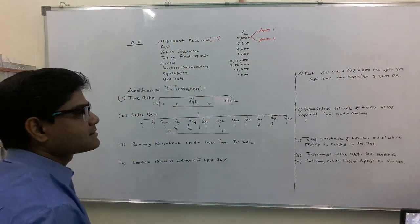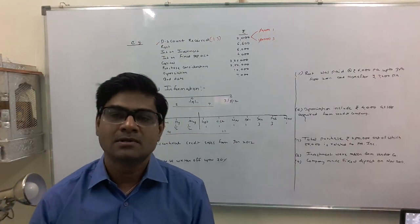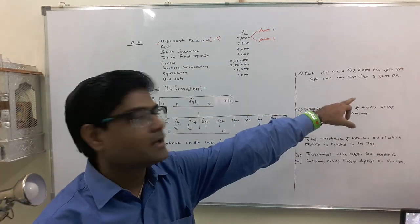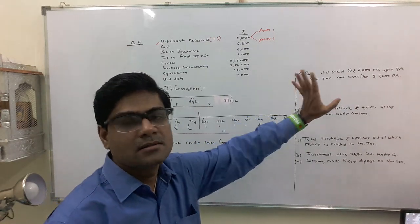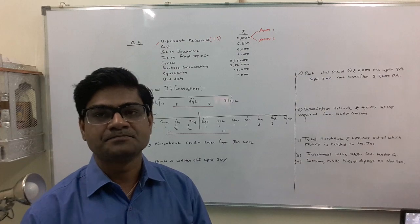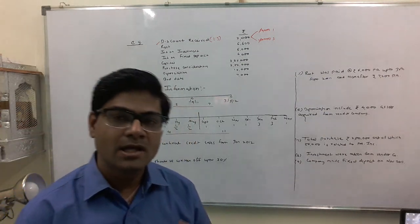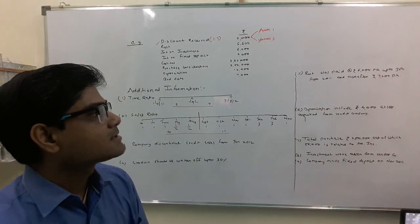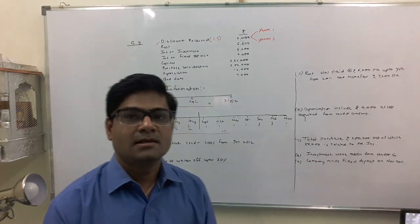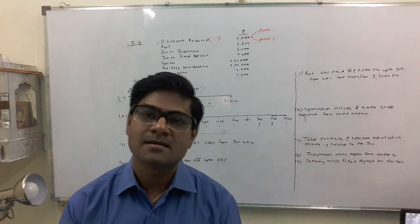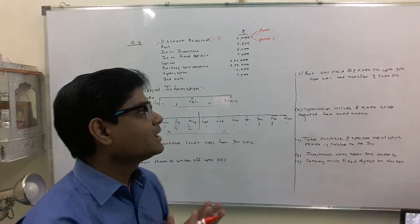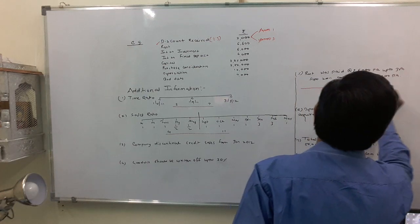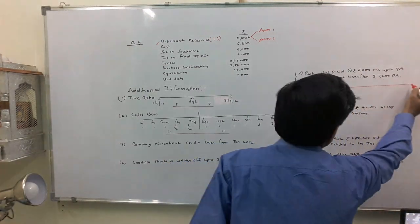Rent of 6,600 — rent is mostly divided by time ratio, but here additional information is given: rent was paid at 6,000 per annum up to 30th September 2011, and thereafter 7,200 per annum. This is like when you take a place on rent, the owner called and said a new agreement will be made — rent becomes 7,200 per annum. So first we need to find the per-month rent for each period, then build a 12-month table divided into pre and post.